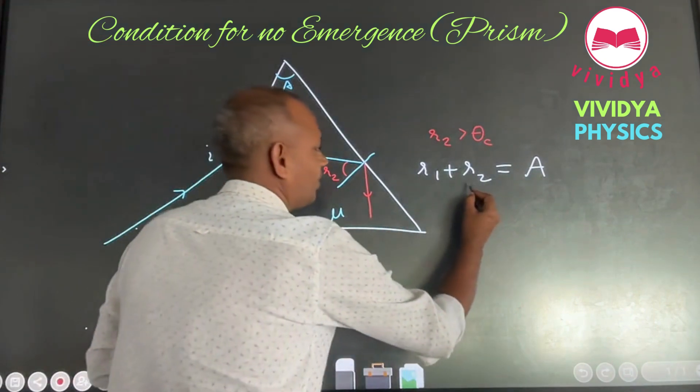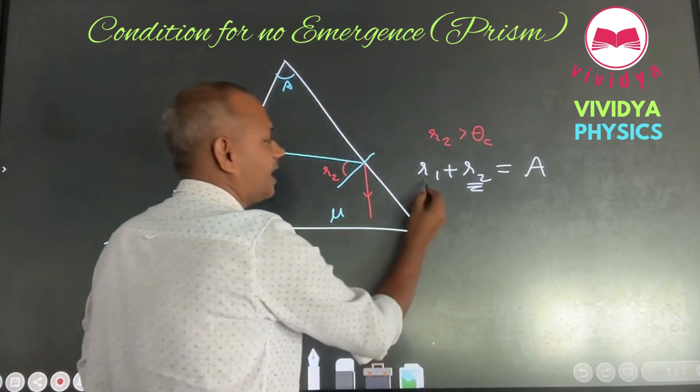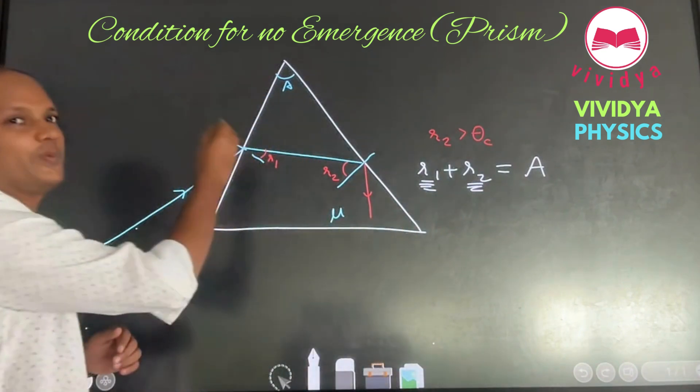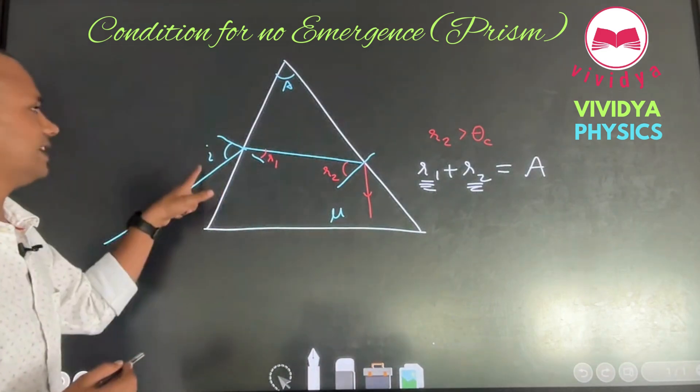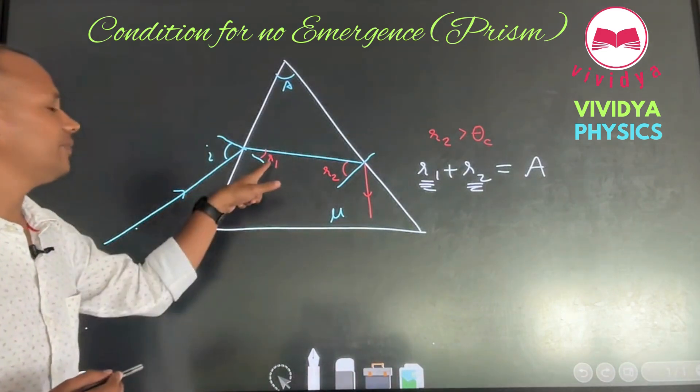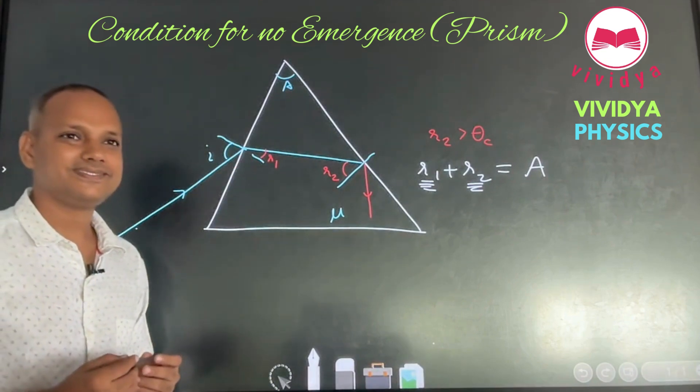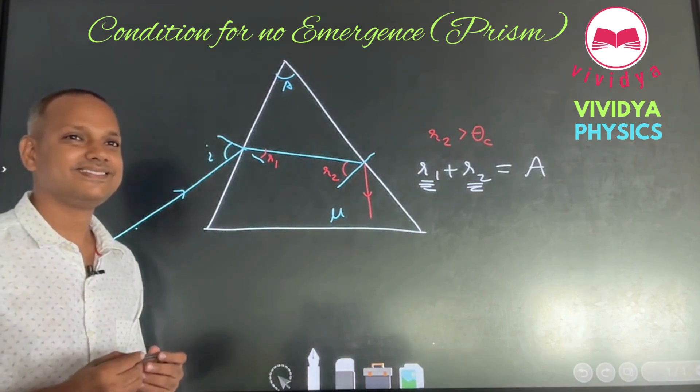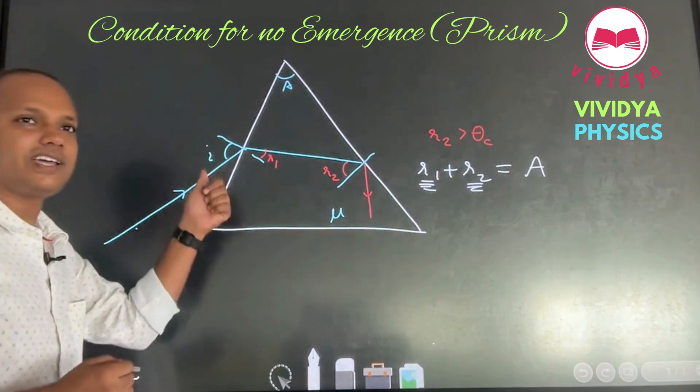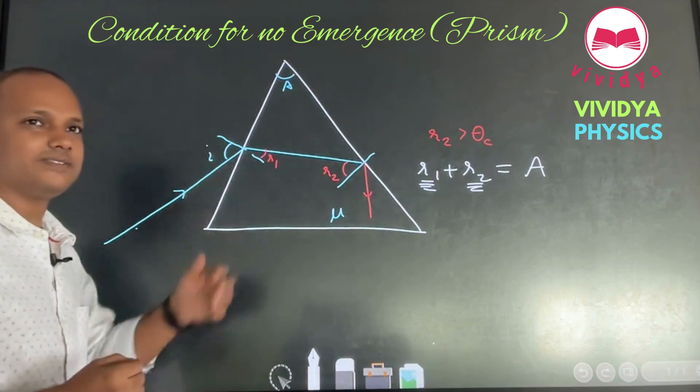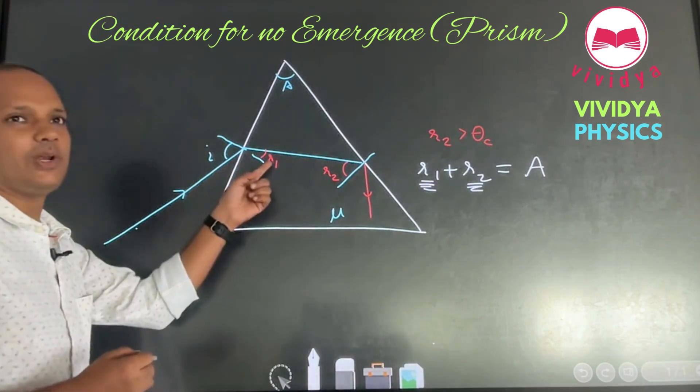Tell me, smallest value of R2 will depend on largest value of R1. What is the largest value of R1? Whatever is i. For what value of i, R1 will be maximum? You increase i, R will increase, right? What is the maximum value of R1?